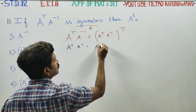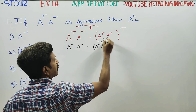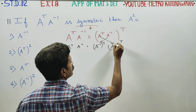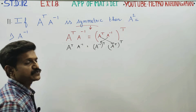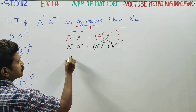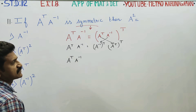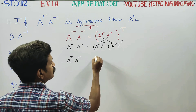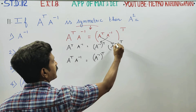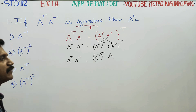If A transpose is equal to A transpose, then A transpose into A inverse into A inverse is equal to A inverse whole transpose. A transpose into A transpose is equal to A transpose.